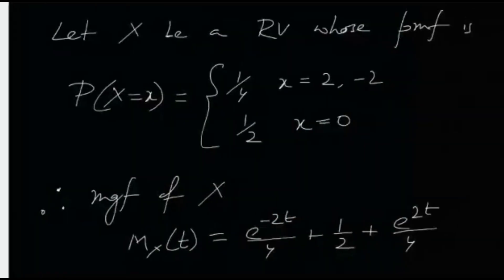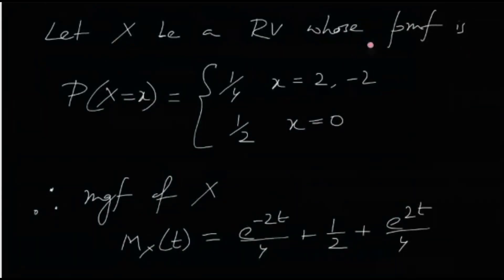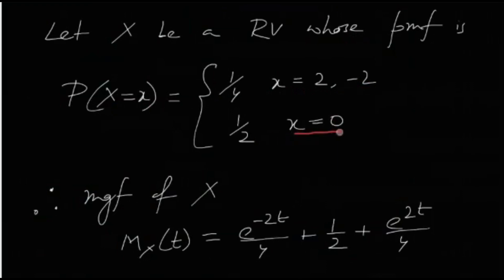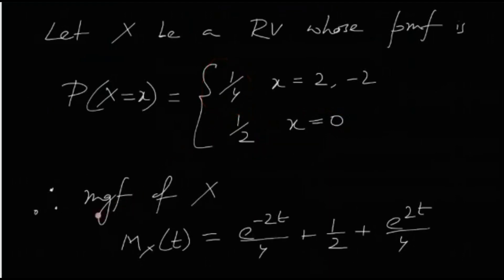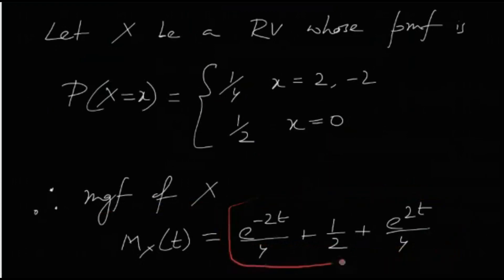Now consider a random variable whose PMF is: P(X = x) = 1/4 if x = 2 or x = −2, and P(X = 0) = 1/2. So X takes only three values: −2, 0, and 2. For this discrete random variable, you can easily calculate the MGF, and it turns out to be exactly the expression we already have.